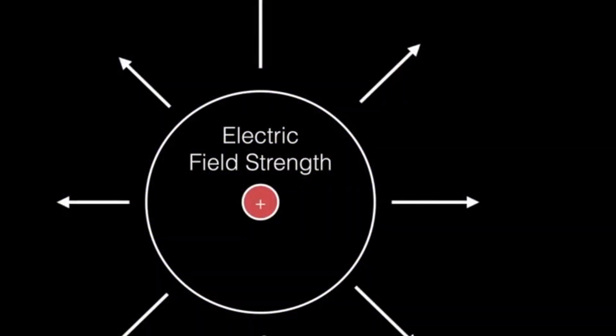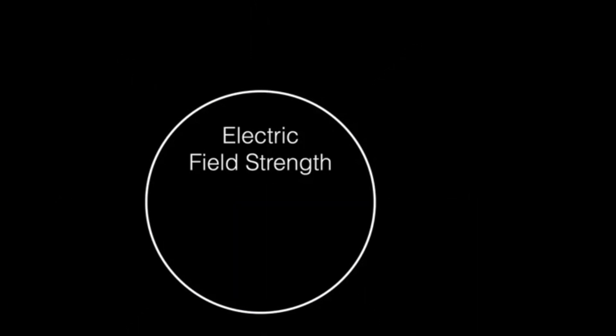So we can measure the electric field strength and we usually represent that using arrows. And so this object has no charge, but if I add positive charge, the electric field moving out from this positive charge. If I remove the charge...